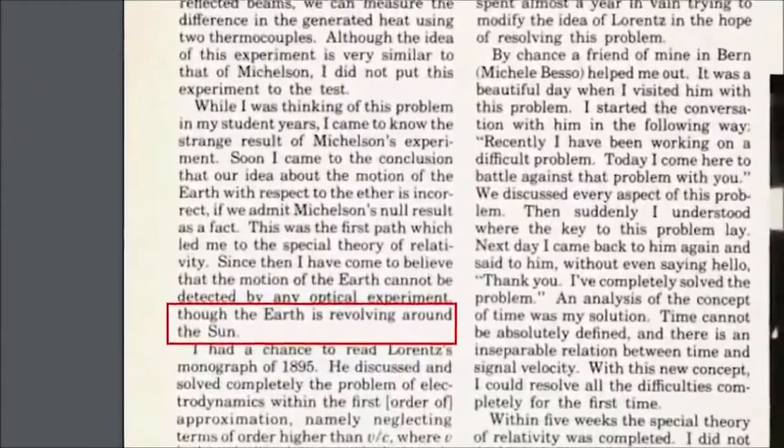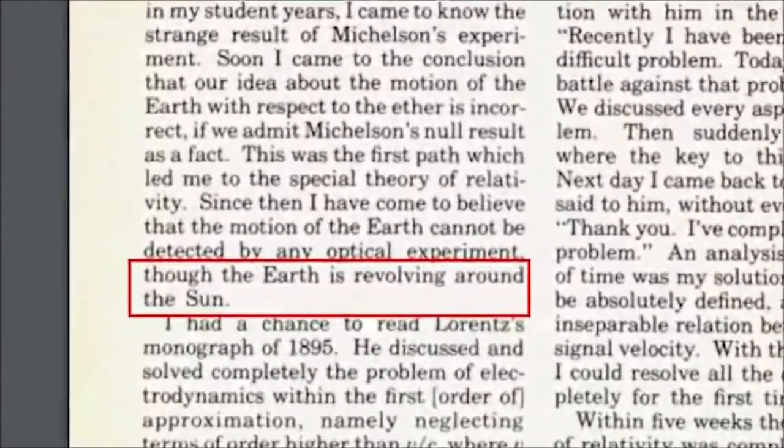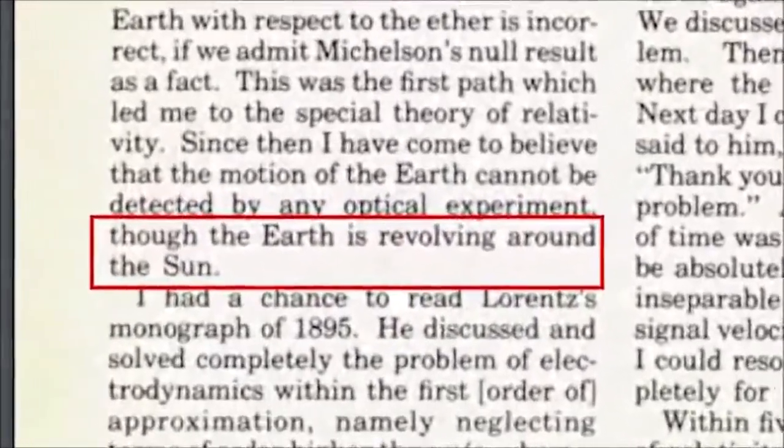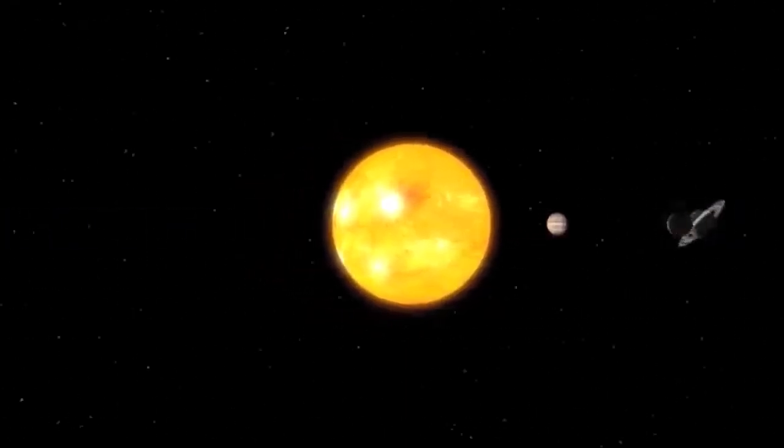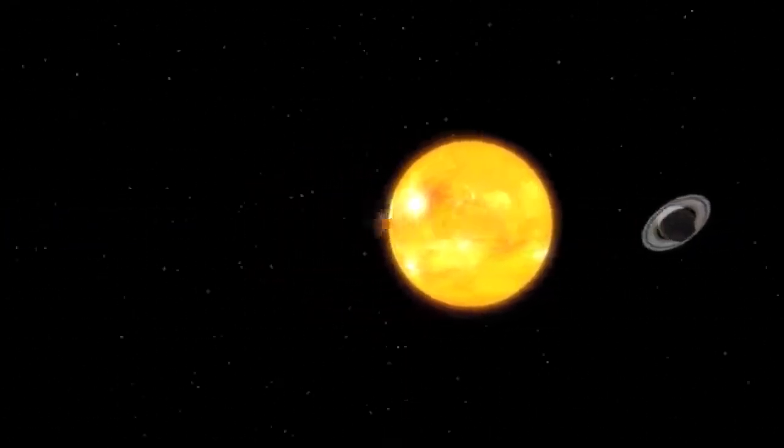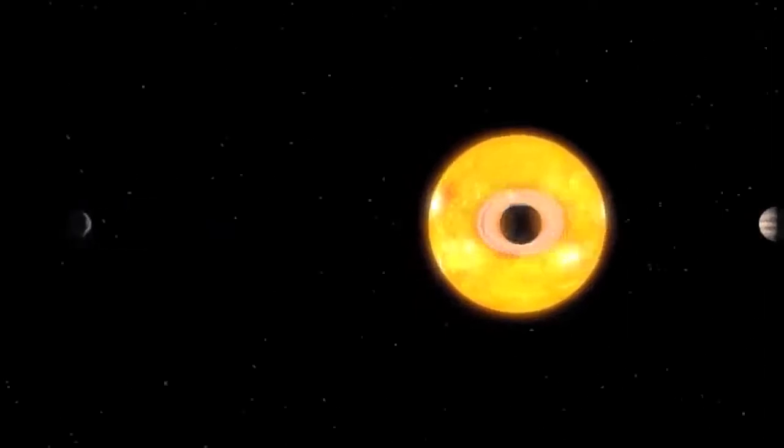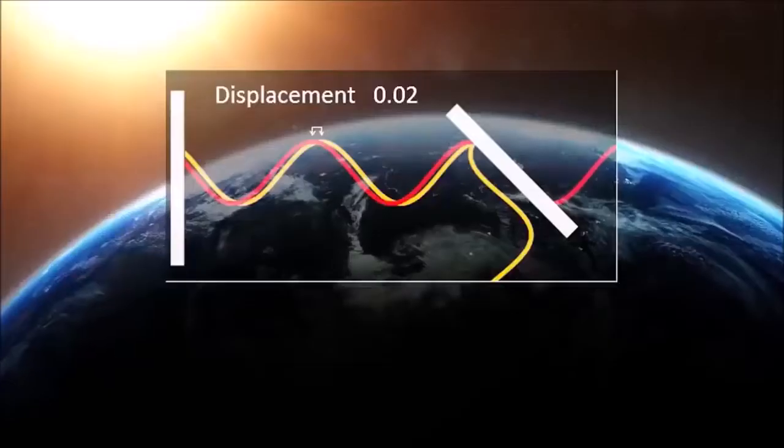The cause of the fallacy, as Einstein admitted above, when he said, though the earth is revolving around the sun, is that they insist on using a moving earth, which they claim to know intuitively, as the indisputable authority to interpret Michelson's experiment.